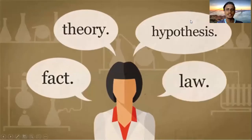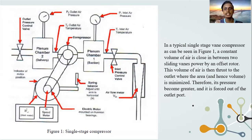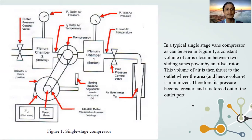For the theory of this experiment, in a typical single stage wind compressor as seen in Figure 1, a constant volume of air is enclosed between two cylinder vanes powered by an offset rotor. This volume of air is then thrust to the outlet where the area and hence volume is minimized. Therefore, its pressure becomes greater and it is forced out of the outlet port.